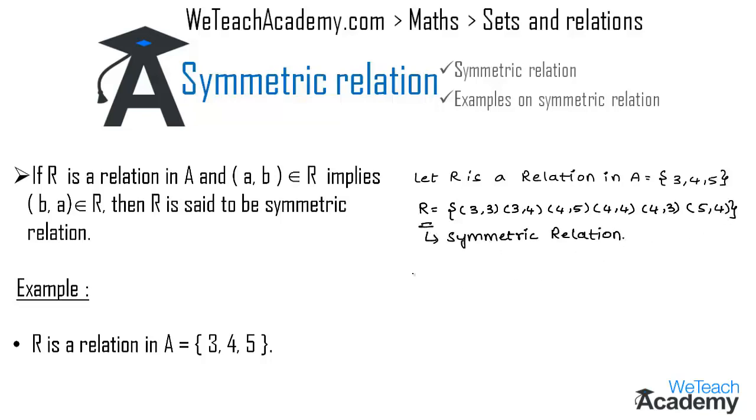Now let us consider another example. Here we have R is defined by 'is parallel to' and the lines l, m are in the set A. If (l, m) ∈ R implies that l is parallel to m, then R must contain the ordered pair (m, l) also belonging to R, which implies m is parallel to l. So we call R a symmetric relation.